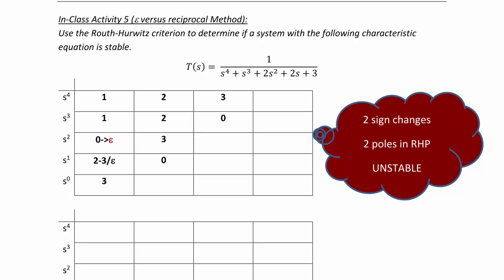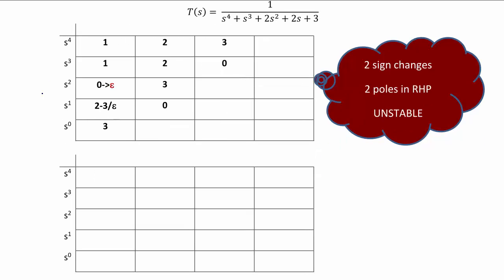Now let's look at how we would do the same problem using the reciprocal method, knowing that when you do the reciprocal method, you would end up with the same sign changes in the characteristic equation. So to do the reciprocal method, you replace all of the s's in the characteristic equation with one over s. So T would equal one over s to the fourth plus one over s cubed plus two over s squared plus two over s plus three.